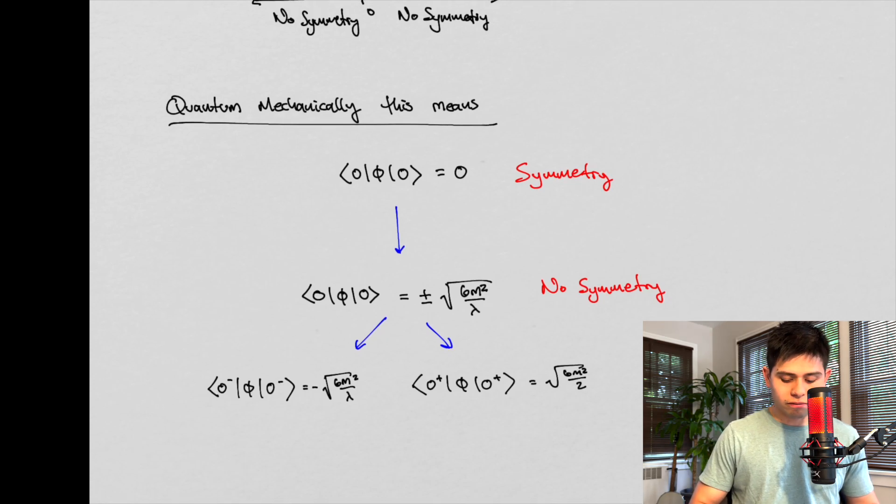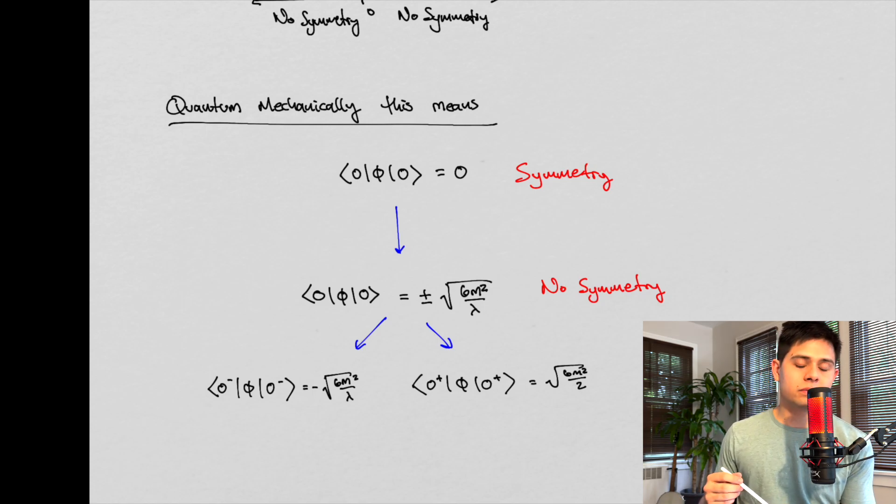And so with all that being said, this is a pretty short video. We're only about fifteen minutes into this video, but that's all I really want to talk about. In our next video, we're going to be talking about spontaneous mass generation. Spontaneous mass generation is something that's a consequence of interaction theories.